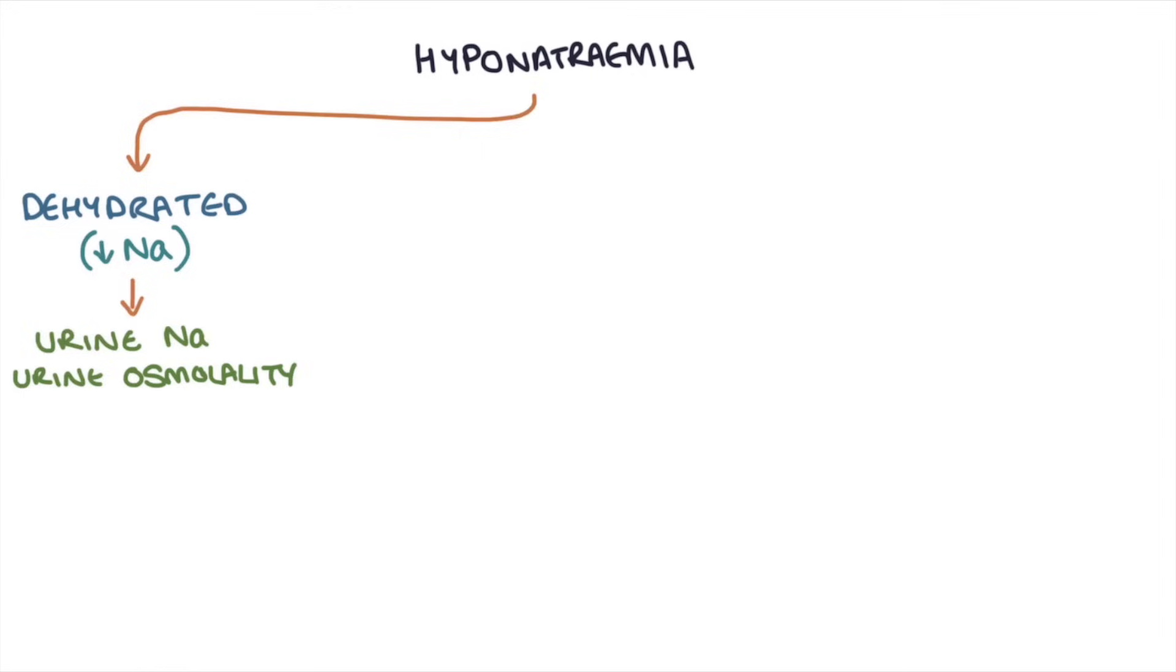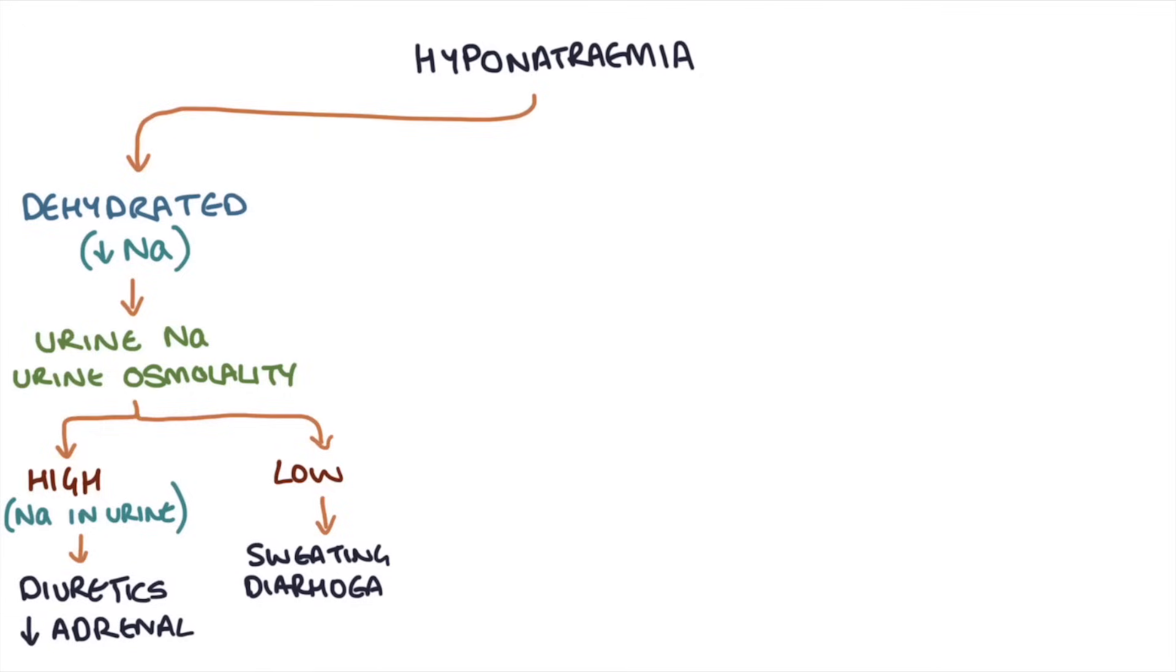Let's run through the possible outcomes when a patient has hyponatremia. Let's say you assess them and they're dehydrated. You know they've lost sodium from somewhere, so you check the urine sodium and the urine osmolality. If these are high because there's lots of sodium in the urine, you know the person has lost sodium from the kidneys, so the possible causes include diuretics or adrenal insufficiency. If these are low, you know the sodium is being lost from somewhere else, for example, sweating, diarrhea, vomiting, or burns.